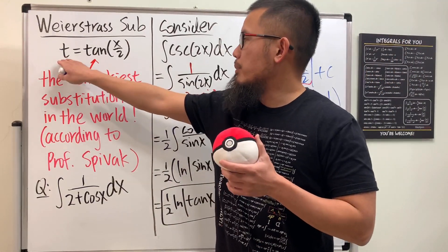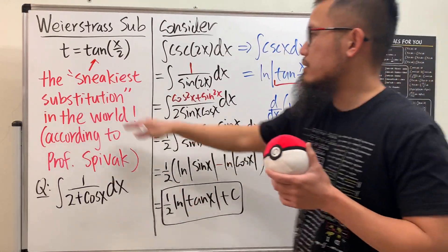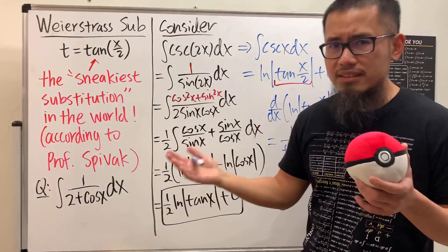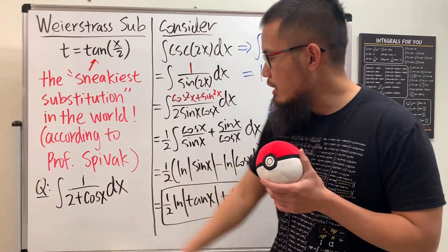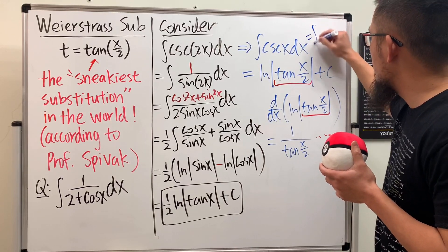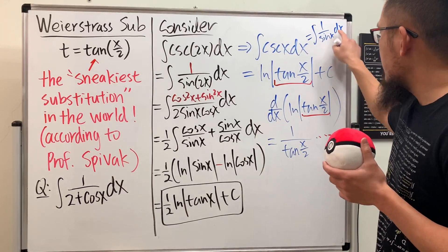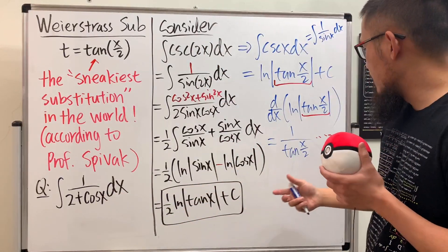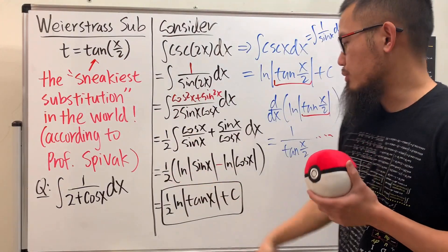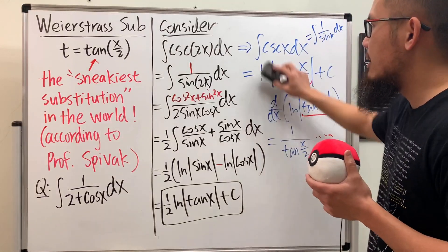I think this is what suggests that maybe you can take t equal to tangent of x over 2. Let's try to figure out other things based on this substitution and see if it helps us solve the integral of 1 over sine x by expressing sine x and cosine x in terms of t.